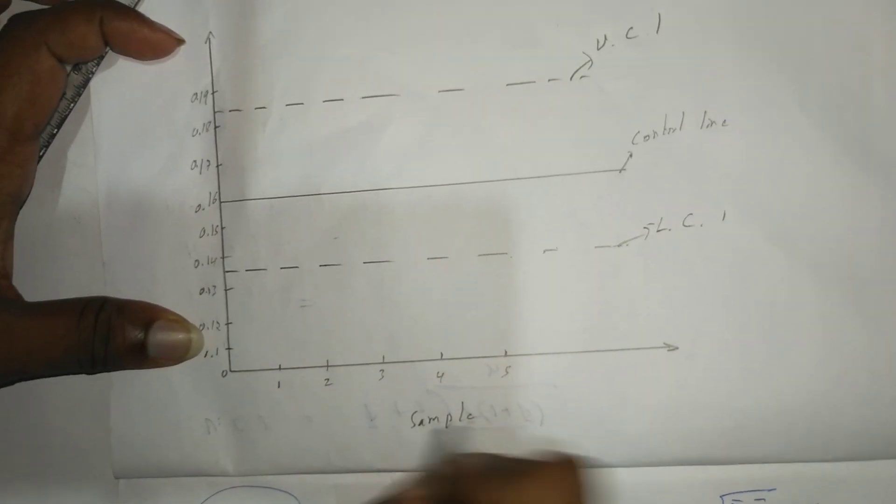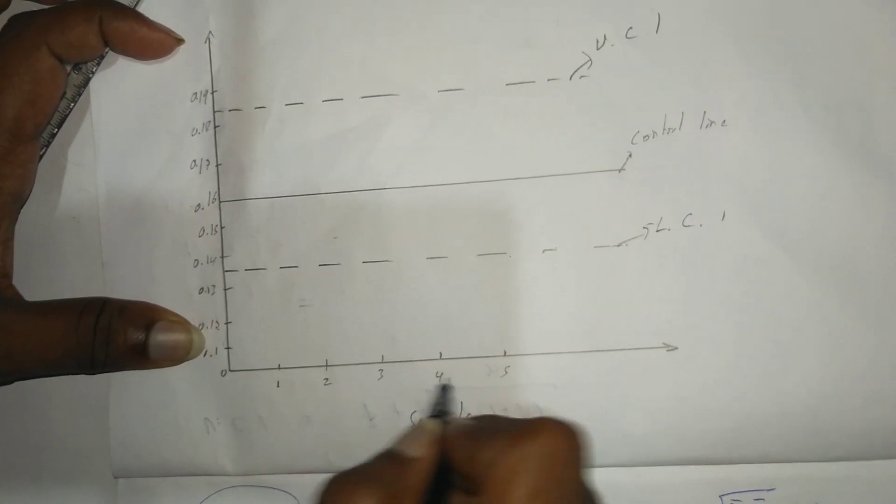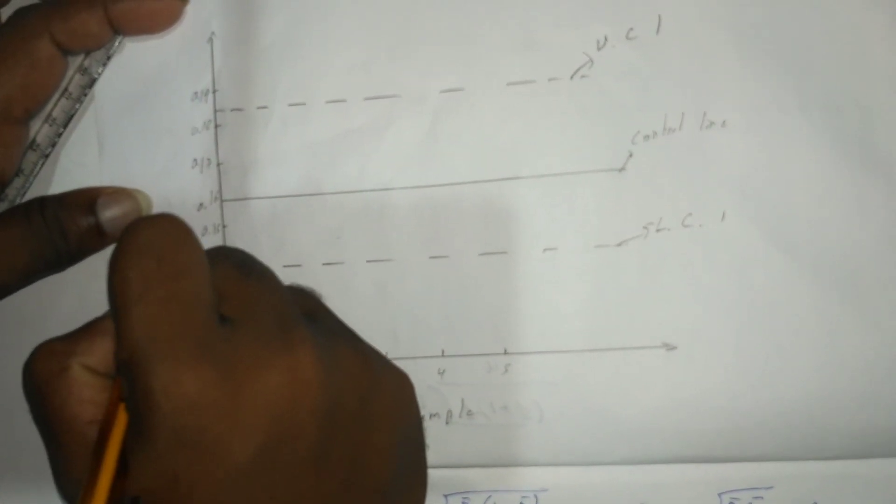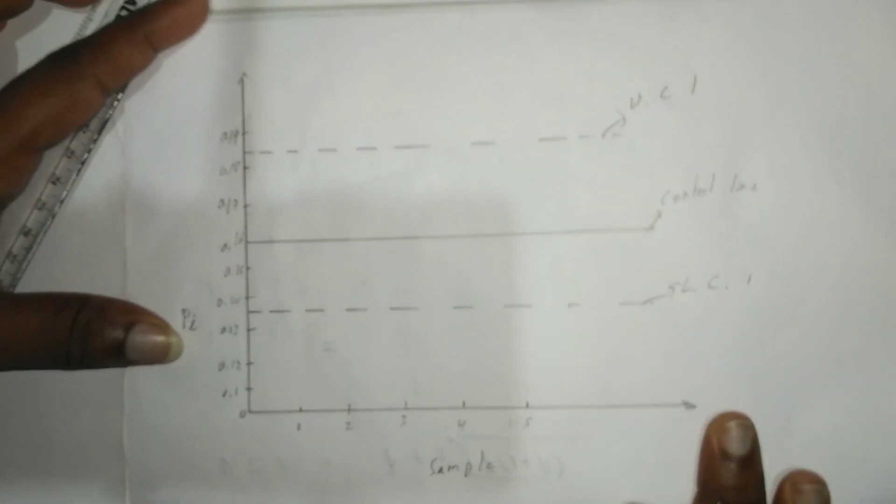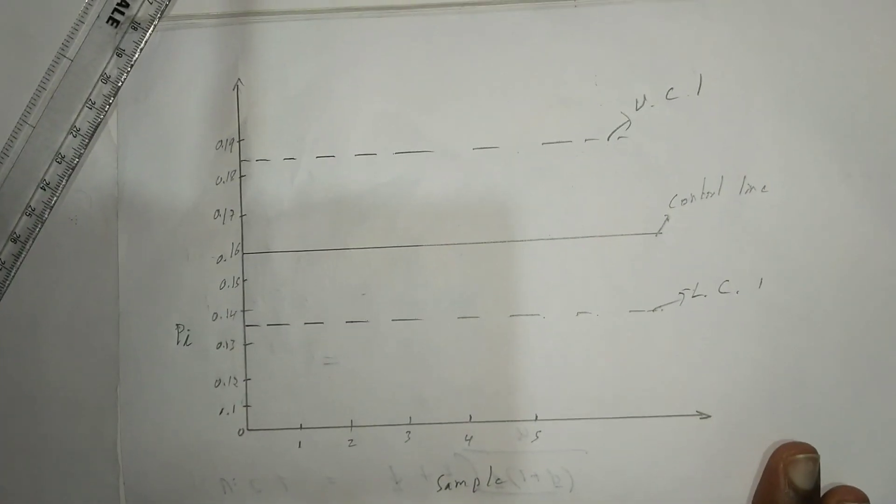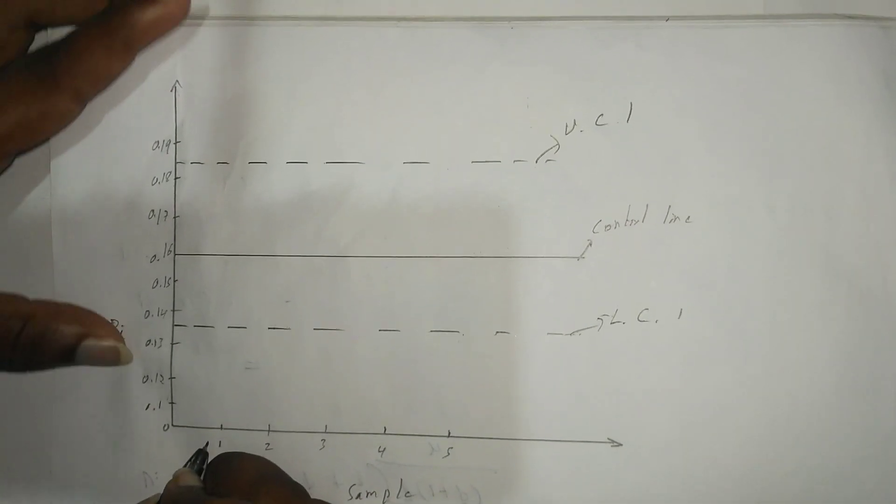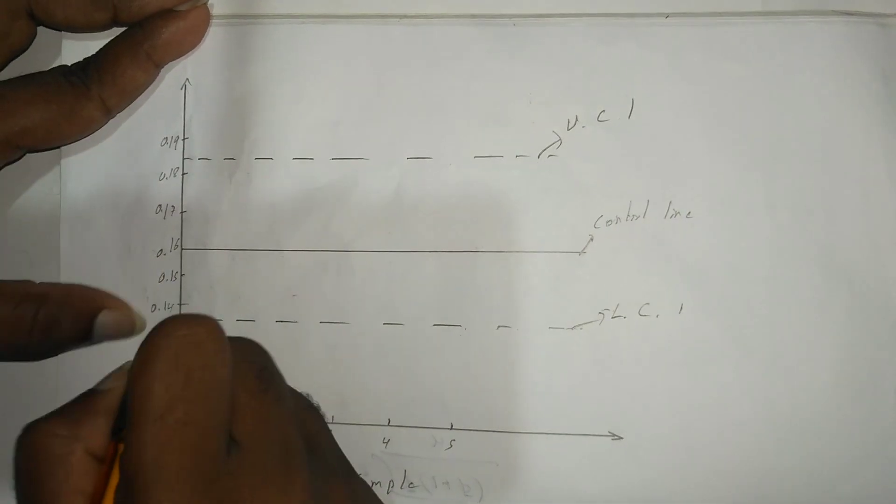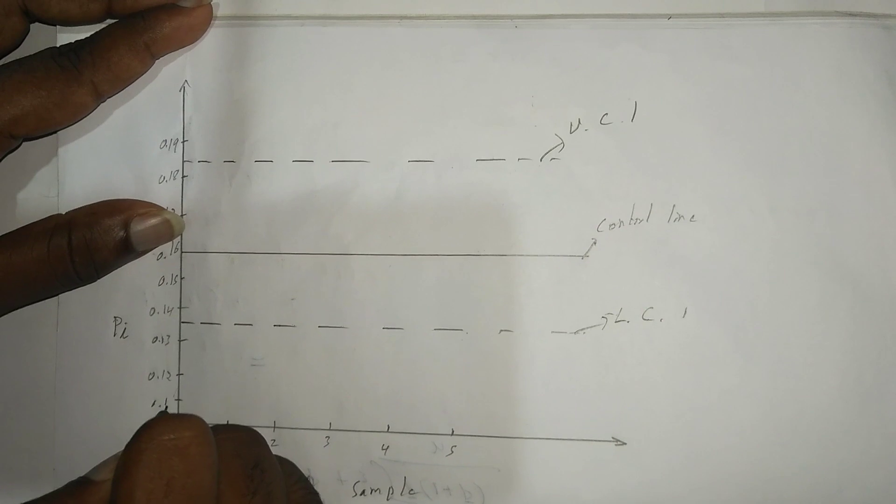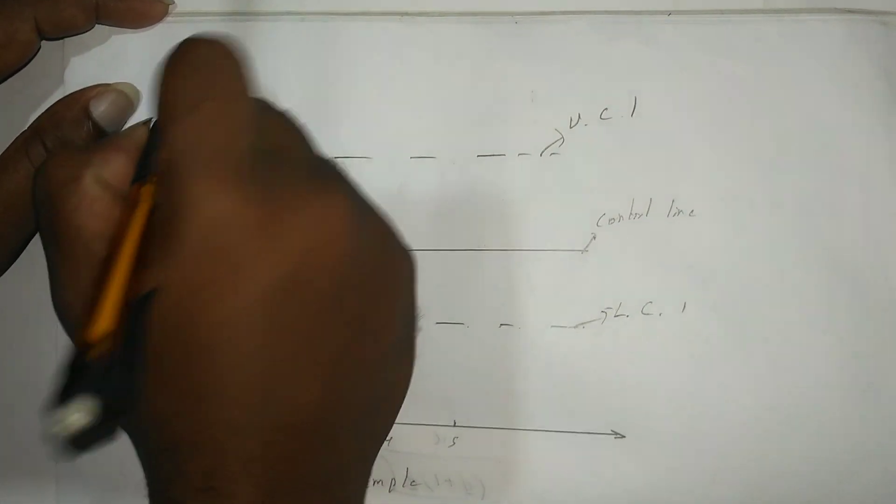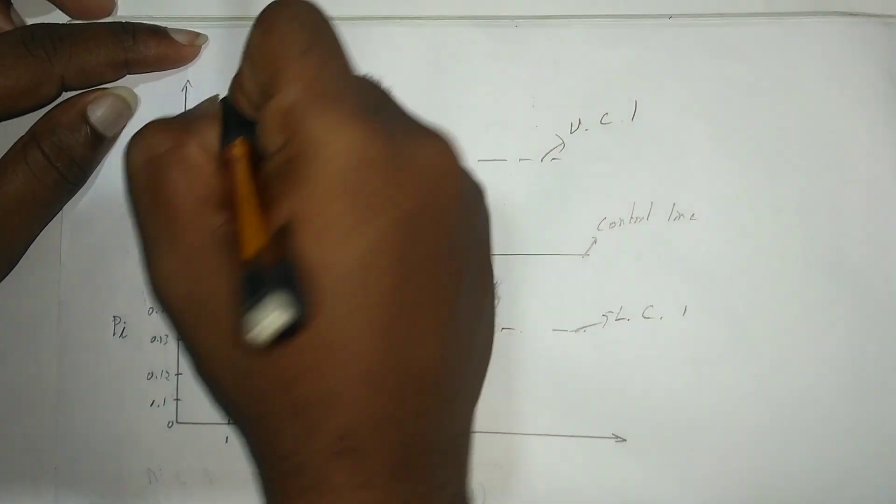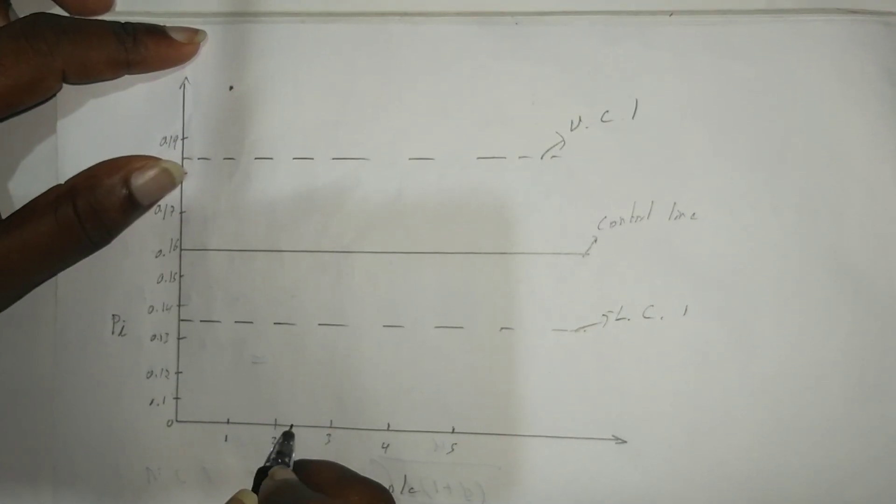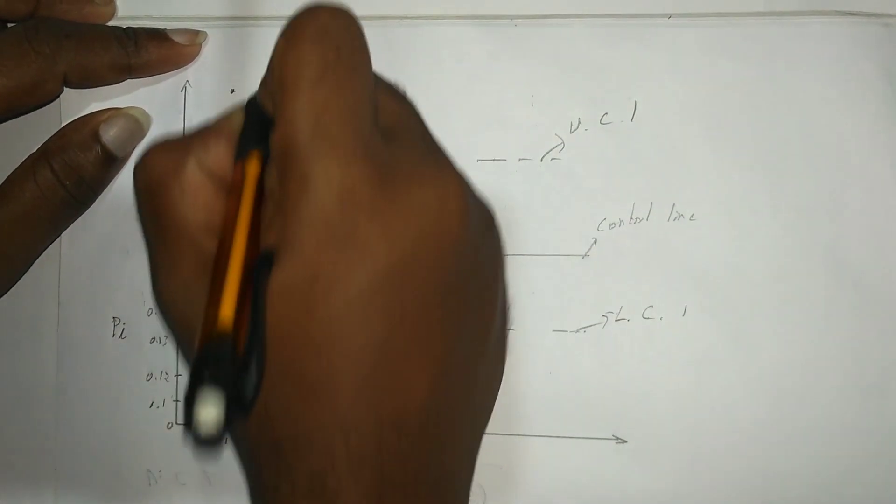The first pi value is 0.2125, so it is out of control, plotted here. The second one is 0.215, also out of control. The third is 0.108, plotted here below the lower control line.